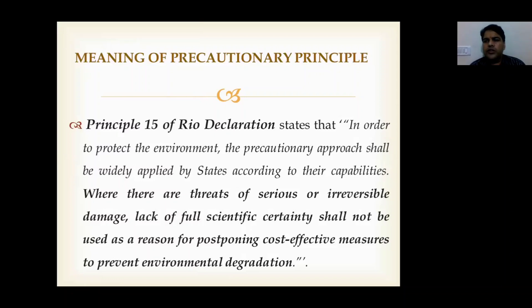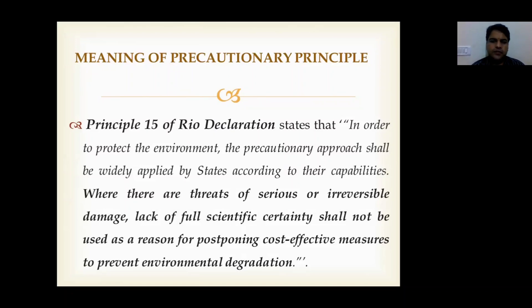Coming to the precautionary principle — this principle finds its place in the Rio Declaration, particularly Principle 15, which provides for this principle. It states that the precautionary approach shall be widely adopted and applied by the states. This basically means that if there are certain activities causing serious threat or serious damage, then in case of lack of full scientific certainty, such activities must be postponed. Scientific certainty must not be awaited in such cases — immediate postponement of such activities is necessary.